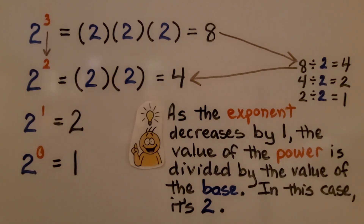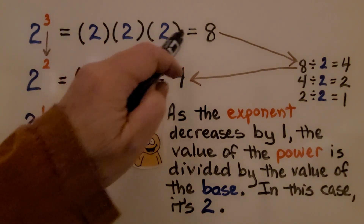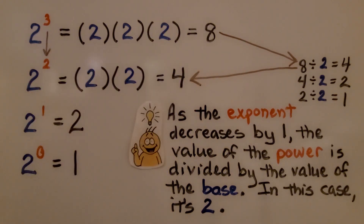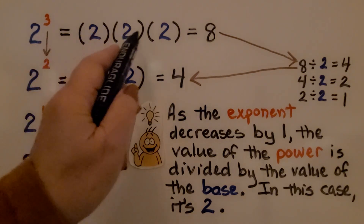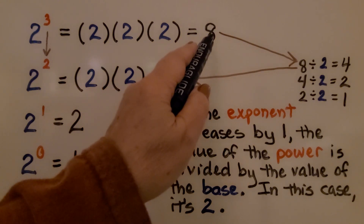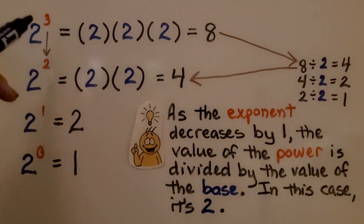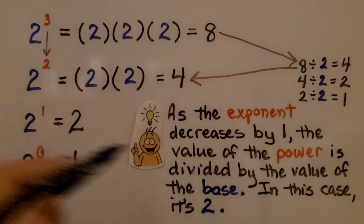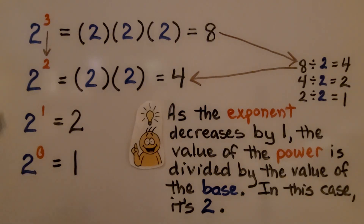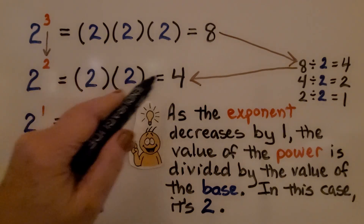Now take a look at the pattern that's happening here. We have 2 to the third power, which means 2 times 2 times 2, and that's equal to 8. As the exponent decreases by 1 — it went from 3 to 2 — the value of the power is divided by the value of the base. Because we have 2 to the second power, 1 less, we're doing 8 divided by this base 2, which gives us 4. And 2 to the second power is 2 times 2, which equals 4.